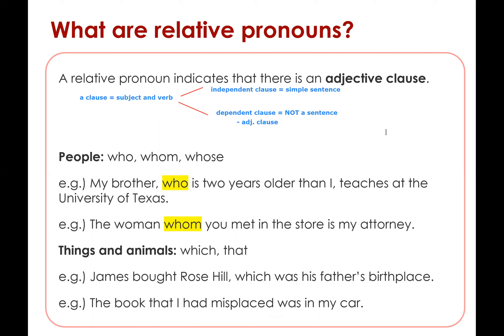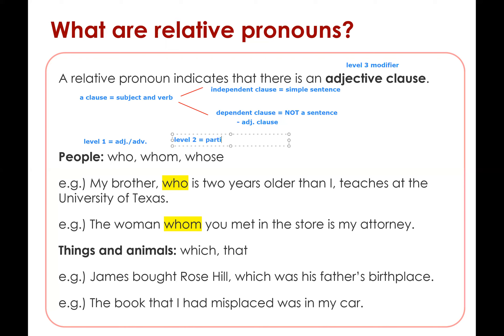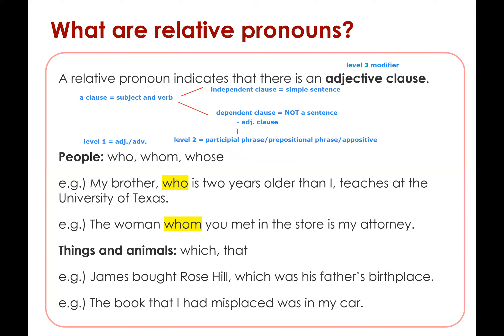It is simply a level three modifier. If you remember, we talked about adjectives and adverbs already — that is a level one modifier, a simple word that modifies another word. We also talked about level two modifiers, which are our phrases: participle phrase, prepositional phrase, and our appositive phrase, which is a noun phrase that modifies another noun. But a phrase is simply a group of words without subject and verb, so a phrase is never a sentence. Level three modifier is our adjective clause, and it starts with our relative pronouns.